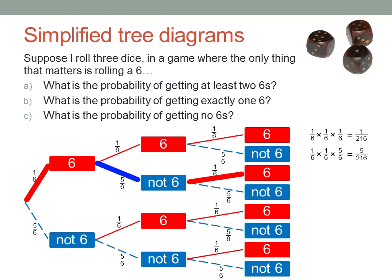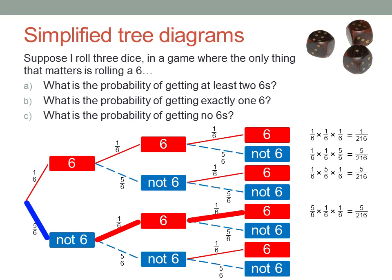The third way, a six, not a six, then a six, is the same probability. And the fourth way, with the not-a-six roll first, is also five in two hundred and sixteen.